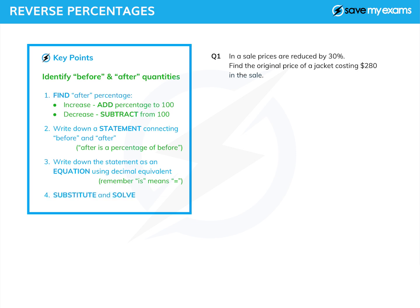Let's see how that works in practice. In a sale, prices are reduced by 30%, so we have an after percentage of 70%. The before quantity is the original price, and the sale price is our after quantity. We can now write down our statement: the sale price is 70% — a reduction of 30% — of the original price.